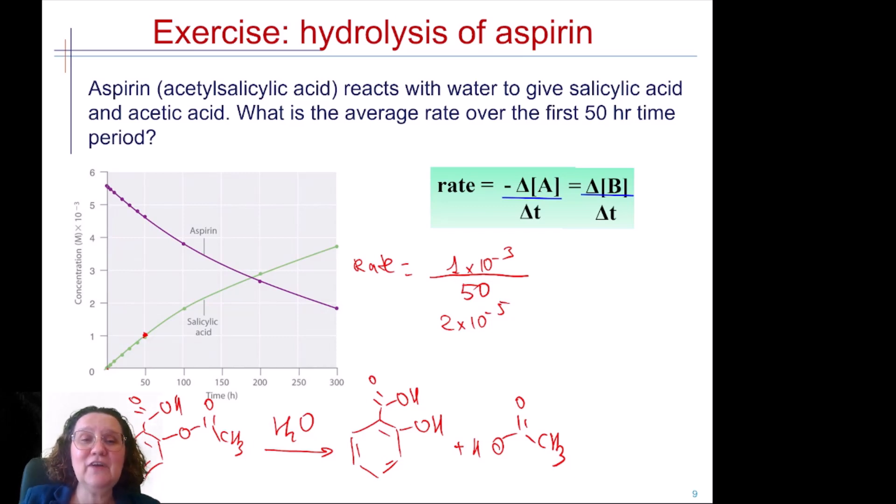And now if I calculate it with respect to the aspirin, then I need to put a minus because it's the reagent. It's a bit more difficult to calculate because the numbers don't work as well as with the salicylic acid that starts at 0. But if I look at it initially I have roughly somewhere between 5 and 6, 5.5×10⁻³.